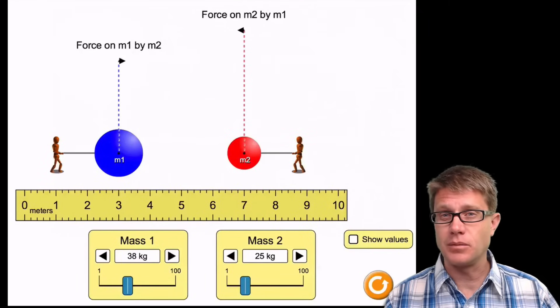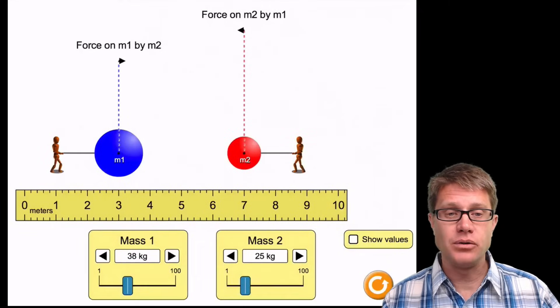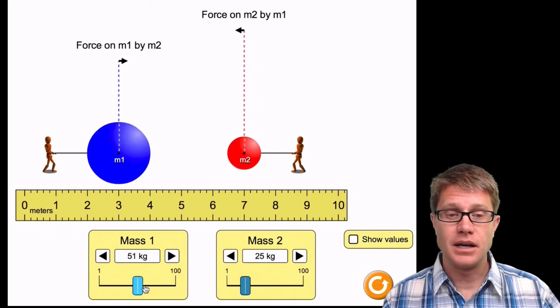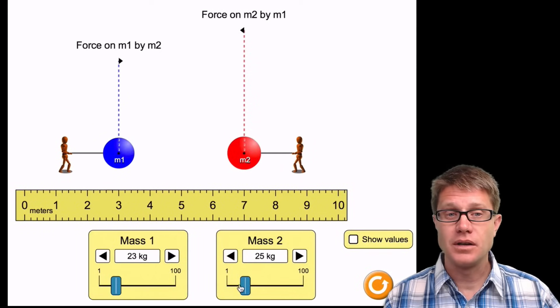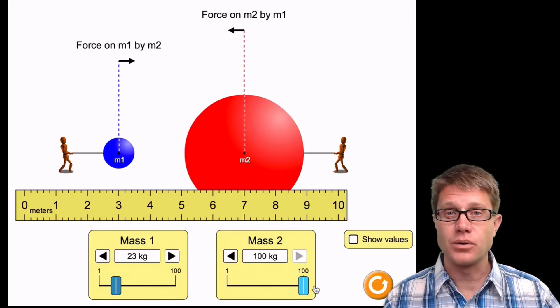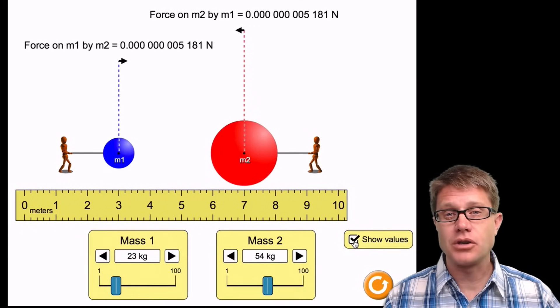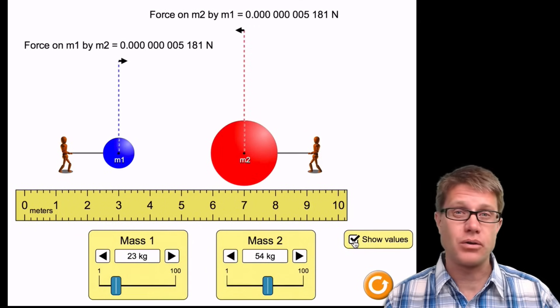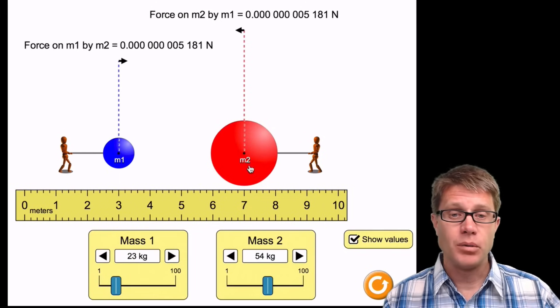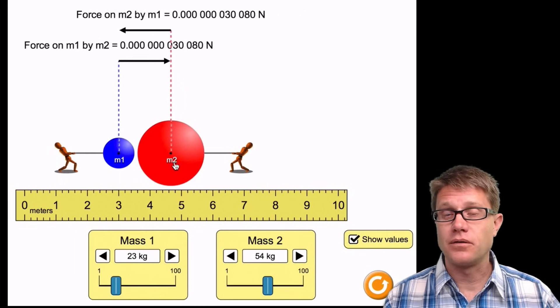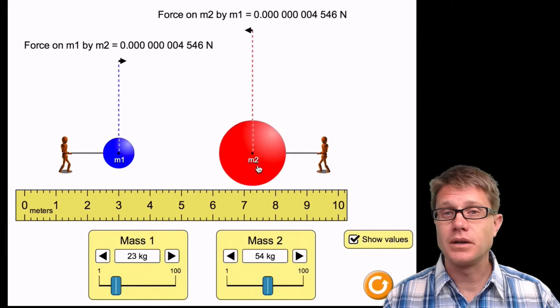And there is a nice PHET simulation that gets at that. So if I have two objects like this, and I increase the mass on one, you can see the force is increasing on both of them. And the force is always going to be equal. Now if we show the values you will see that those numbers are incredibly small. But what happens as we move them close to each other, the force gets larger. As we move them apart, it gets smaller.